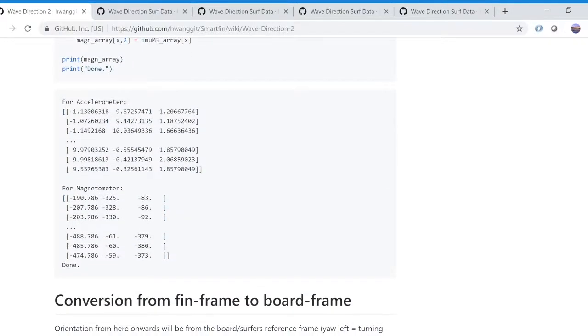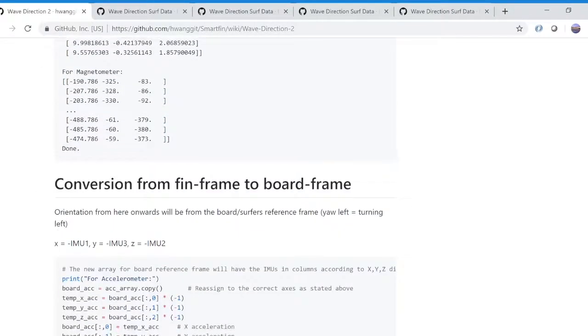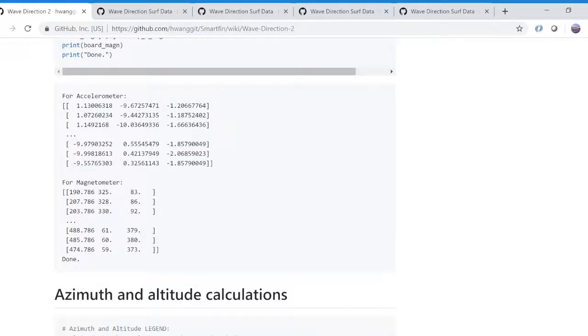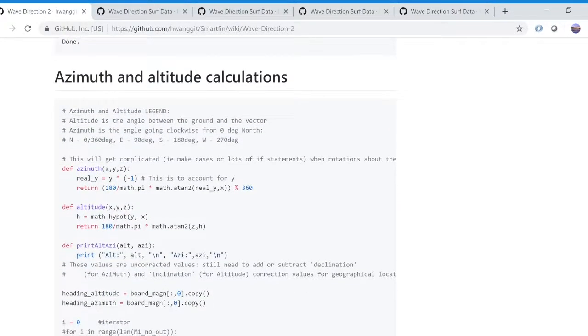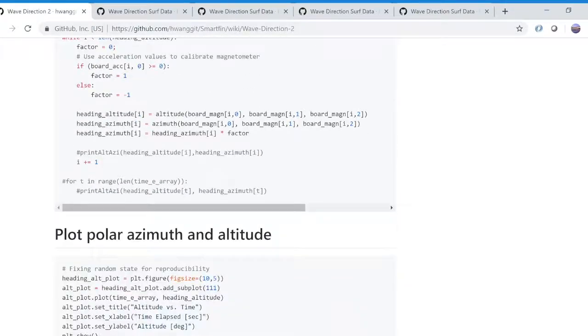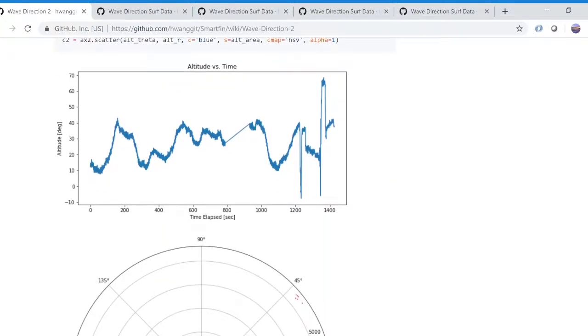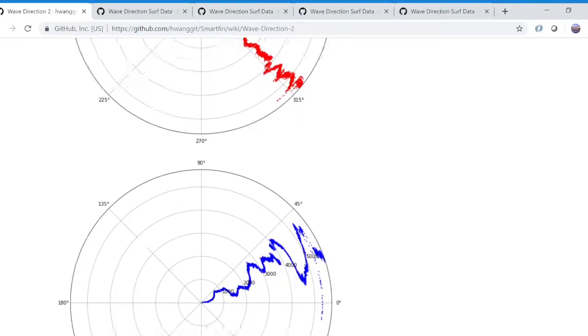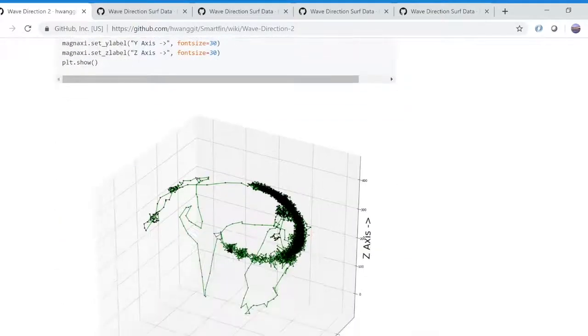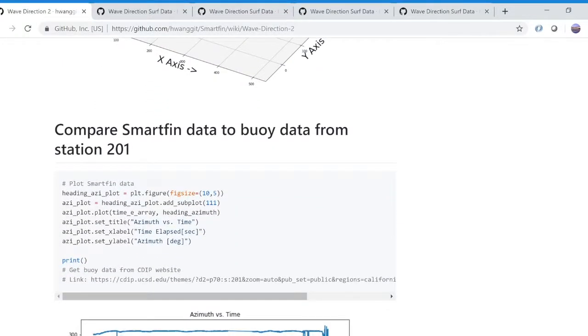This new model I created uses the raw magnetometer values given by the SmartFin's 3D compass and scales this vector using the accelerometer values. Once we have an array of these 3D values, we can easily plot the azimuth and altitude. Then, averaging these azimuth values over the entire trip, we should theoretically get the average direction of waves for that trip.